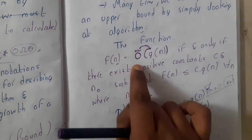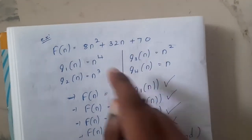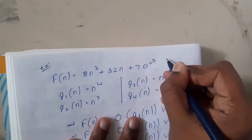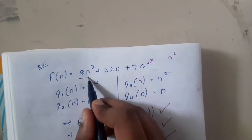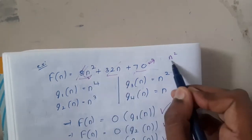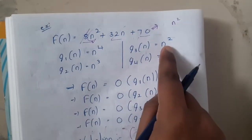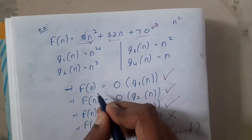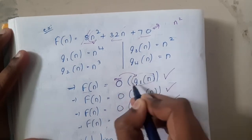So Big O means whoever is inside the brackets is the maximum. Let's take a small example: f(n) = 8n² + 3n + 70. The complexity is n² — among the three terms, n² is dominant, so we ignore the others, and the constant 8 is also dropped. We are left with n².